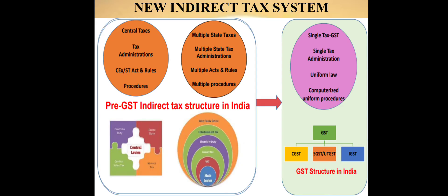These are the new indirect tax system in India after introduction of GST. The central government used to impose lots of taxes like central tax, custom duty, sales tax, central sales tax, and so on. They had their own central tax administration. Similarly, the state governments used to impose so many taxes including VAT, purchase tax, entertainment tax. GST subsumes all these taxes into a single tax system, having a single tax administration, single tax, single law, single act.